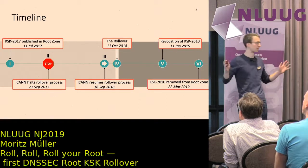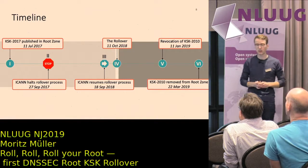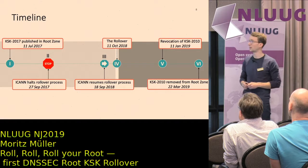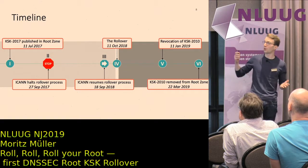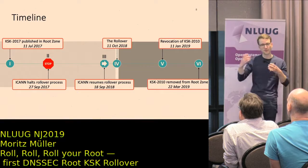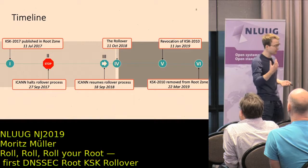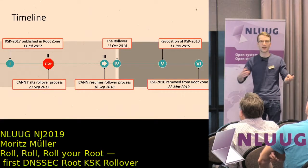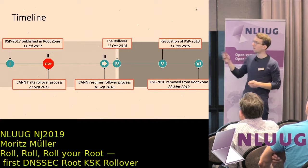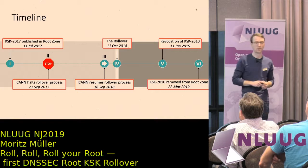Looking at the first stage — everything before the rollover — we mostly used telemetry data provided by resolvers, as defined in RFC 8145. The goal of this telemetry is that resolvers signal to the root servers which key they are currently trusting, usually once per day. The idea was that if we see enough resolvers trusting the new key, it is safe to actually replace it at the root. In our data, we used data from ICANN, A, B, and J root, measuring signals from up to 100,000 validators daily.